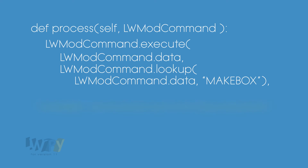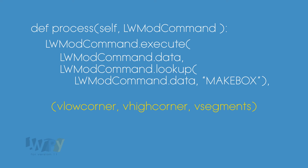Also looking on this page, we see what LightWave wants when using the makebox command. The makebox command takes two required arguments — the coordinates of the low and high corners — and one optional argument, the number of segments along each axis. These three arguments are vectors and are delimited in Python with lists. Lists in Python are immutable and noted by square brackets. These arguments needed by the makebox command happen to be the DynaValues we need as the next arguments for our execute method.